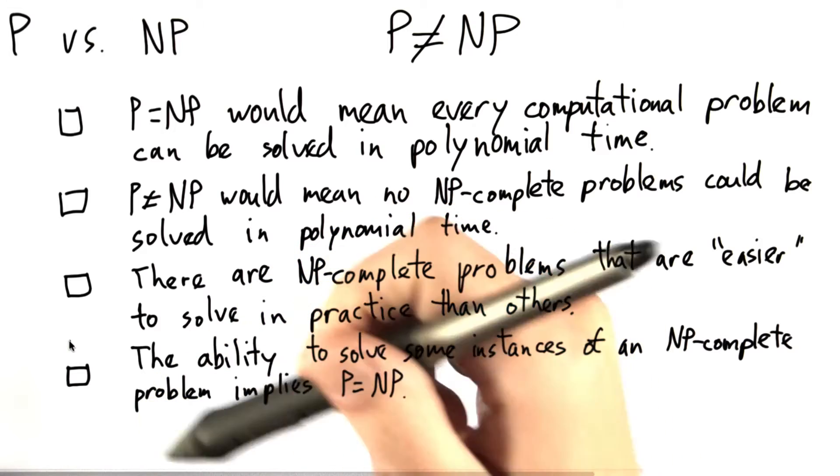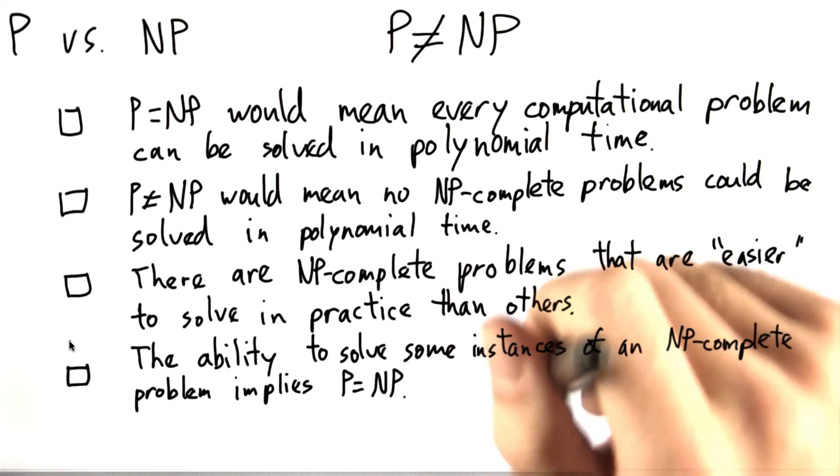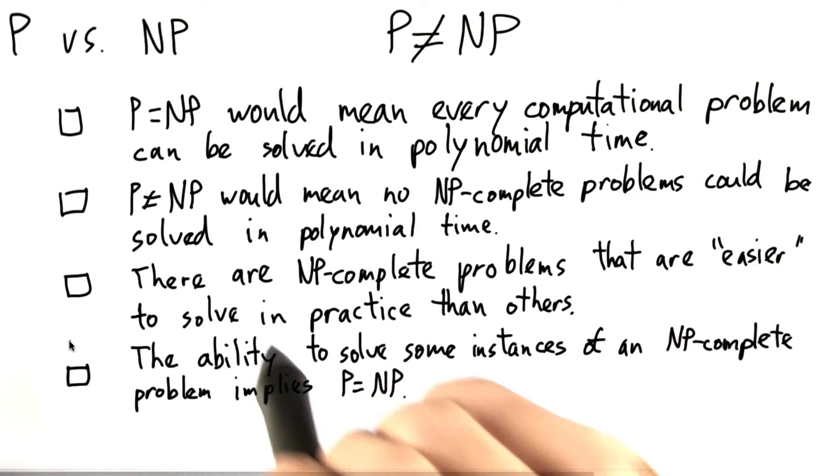We might also say that if we have the ability to solve some instances of an NP-complete problem, then that necessarily implies that P equals NP.